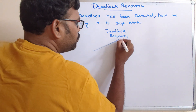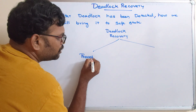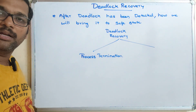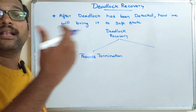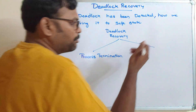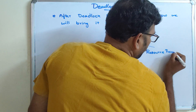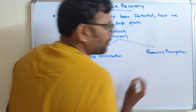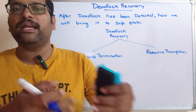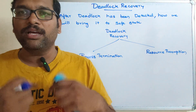Deadlock recovery can be done in two ways. The first one is process termination — simply terminating the processes. We know that processes wait for resources already allocated by another process, and by killing those processes we can avoid the deadlock. The second method is resource preemption — forcibly deallocating resources from one process and allocating them to the process that requires those resources to complete its execution, so we can exit the unsafe state.